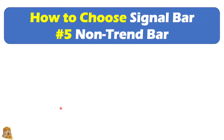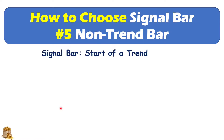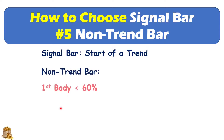How to choose signal bar, number 5: the non-trend bar. A signal bar normally is the start of the trend. For the non-trend bar, there are a few things to consider.